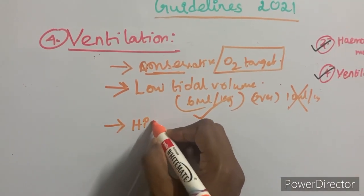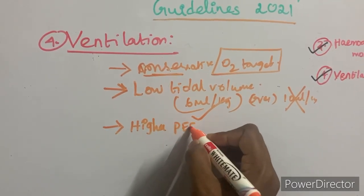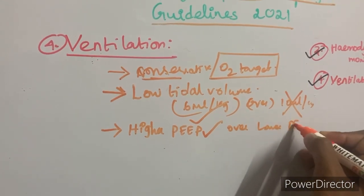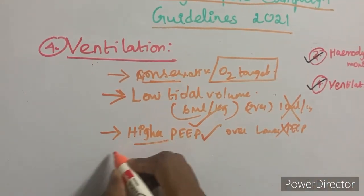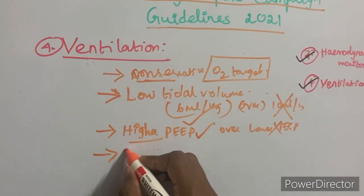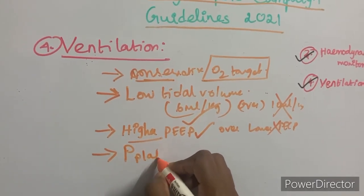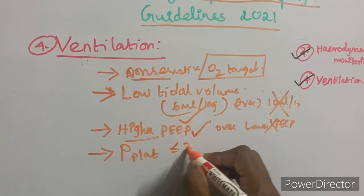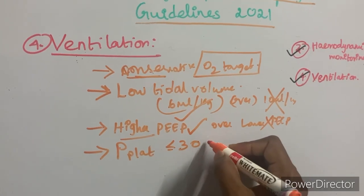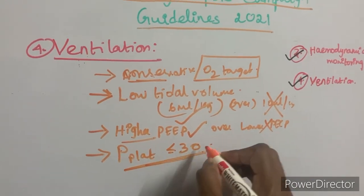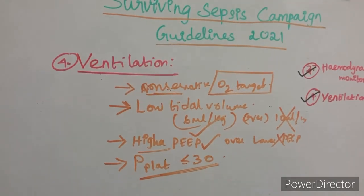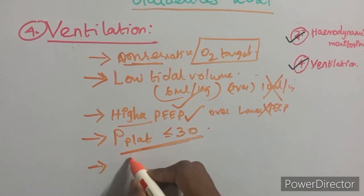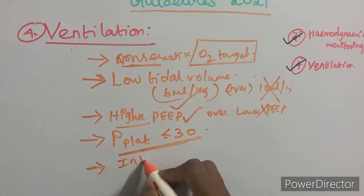In moderate to severe ARDS, higher PEEP values are recommended over lower PEEP values. The plateau pressure should be kept below 30 cmH2O and should not exceed that limit.